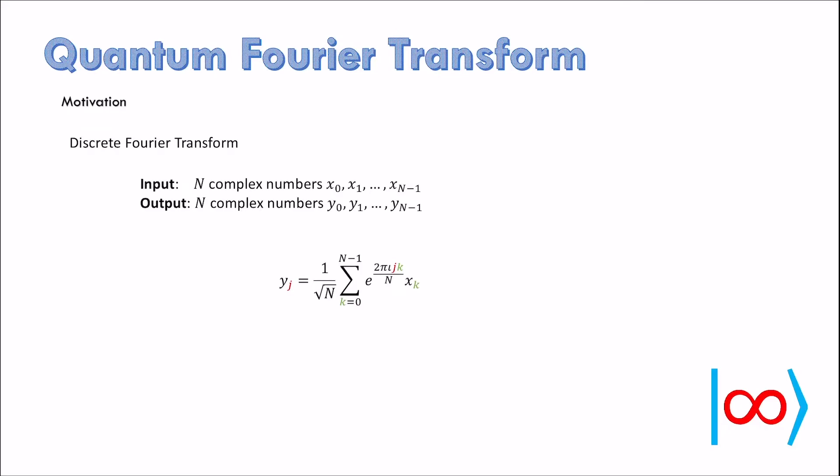These numbers are related by the following expression. Notice that for complex numbers, multiplication by e power i some angle rotates that complex number by that angle. Quantum Fourier transform is obtained by considering the computational basis as input such that each basis vector is transformed to a superposition state in which the amplitudes are the same as those in the discrete Fourier transform.